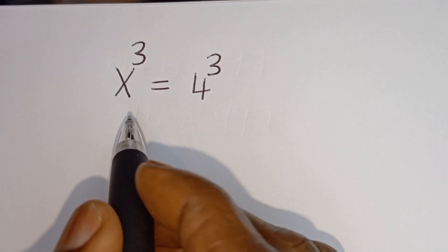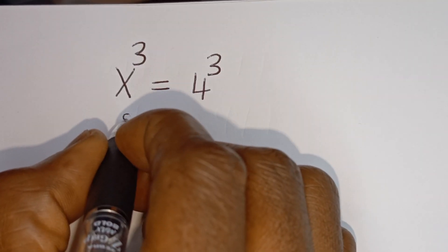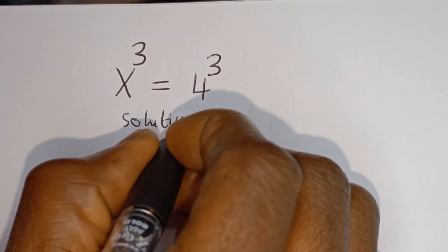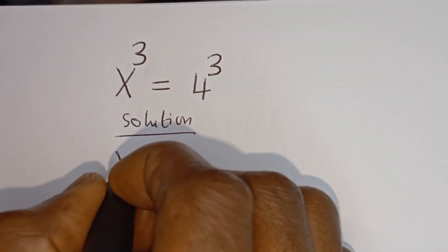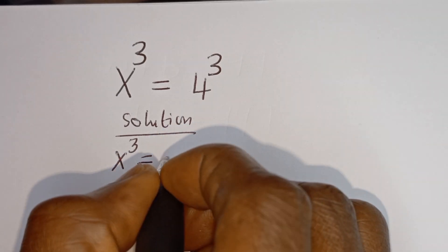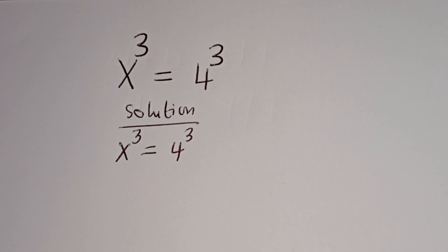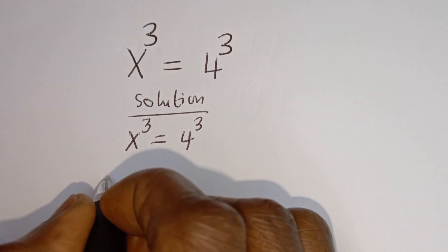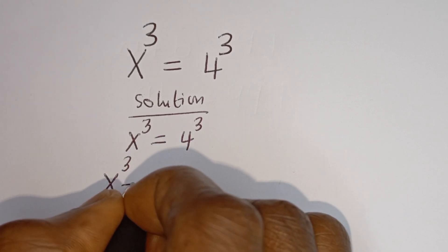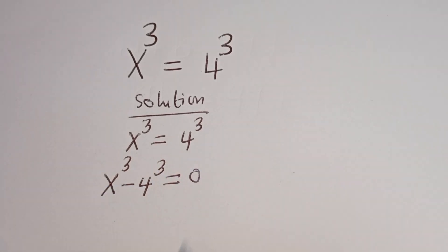Hello. How to solve for s in this equation: s to the power of 3 is equal to 4 to the power of 3. Solution: we have s to the power of 3 is equal to 4 to the power of 3. Now let's take this to this side — we have s to the power of 3 minus 4 to the power of 3 is equal to 0.